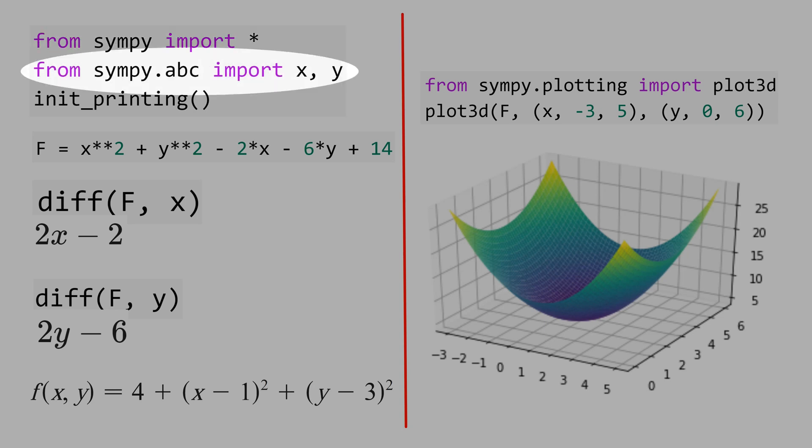Then, we have to import the symbols x and y to make the function f. f equals x squared plus y squared minus 2x minus 6y plus 14.